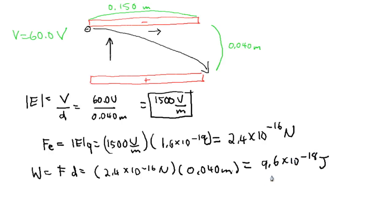And in order to determine the velocity of this electron, we need to let that equal to kinetic energy. So we let that work, which is 9.6 times 10 to the negative 18 joules, equal to mv squared over 2.